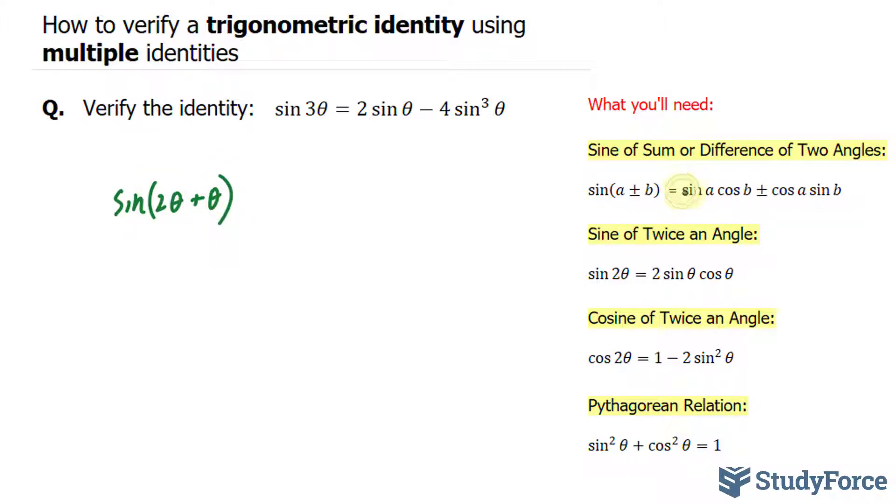And by doing that, I can use the following identity, where I have sin 2θ. This is serving as my alpha in this case, and this serves as my beta. So sin 2θ cos θ + cos 2θ sin θ.